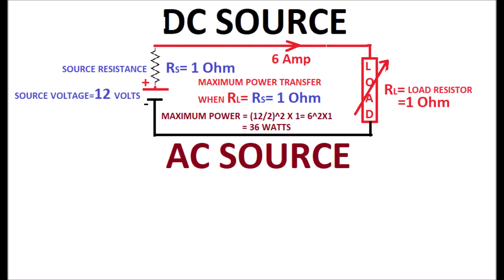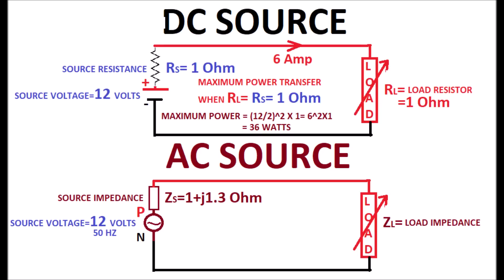Similarly, in an AC source having 12 volts 50 hertz with internal impedance of 1 plus j1.3 ohm is connected to a variable load impedance.